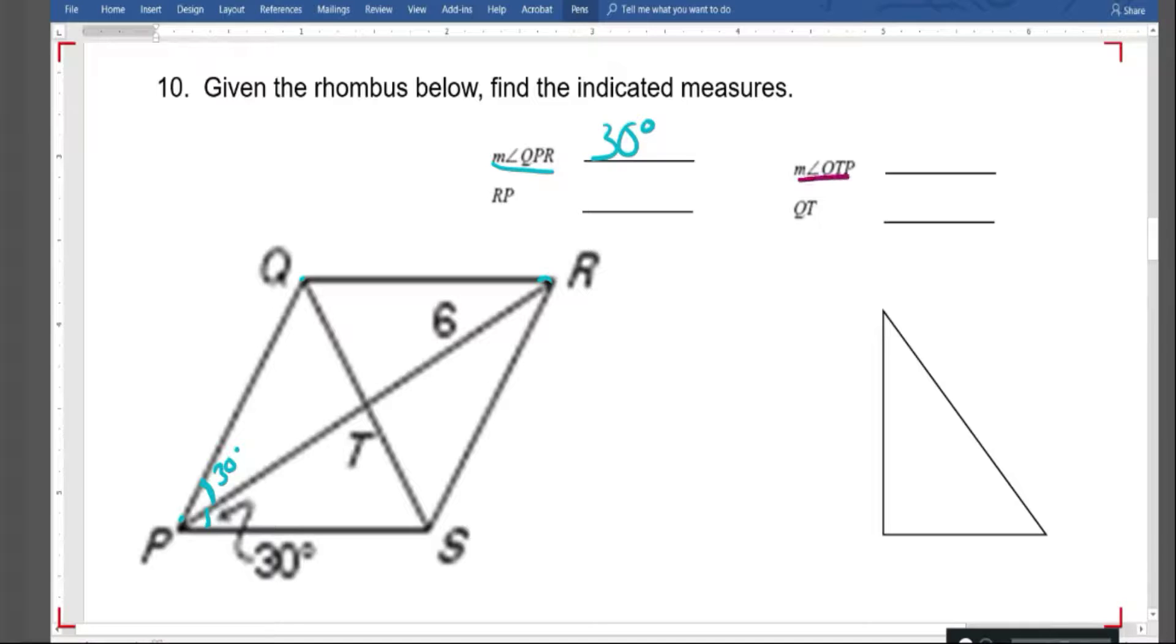Next thing I'm looking for is angle QTP. So QTP. Once again, this is just a property of a rhombus. The diagonals are perpendicular bisectors. So I know perpendicular lines make 90 degree angles. I'm gonna go ahead and write that up here.